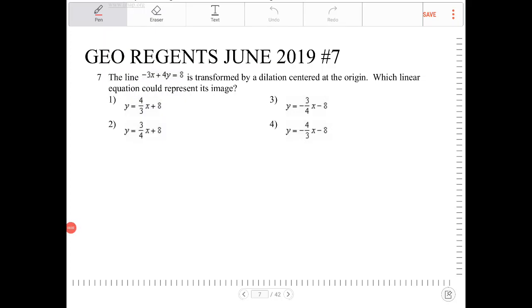The line negative 3x plus 4y equal to 8 is transformed by a dilation centered at the origin. Which linear equation could represent its image? This question often repeats in the regents where we are dilating a line and not a line segment.